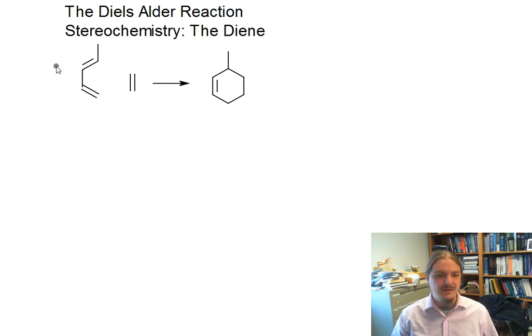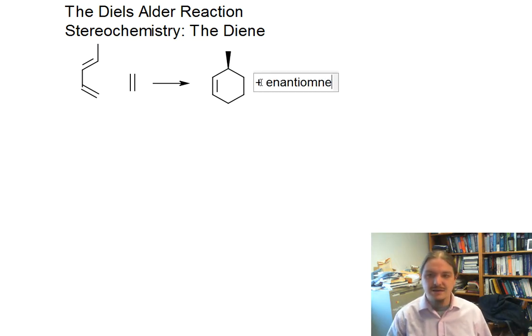You again generate a chirality center. And however, because the reactants are achiral, we get the racemic mixture out of this reaction.